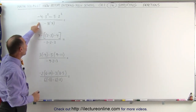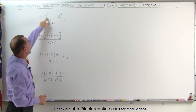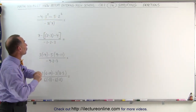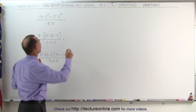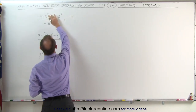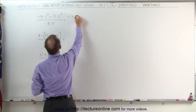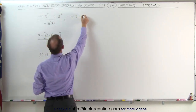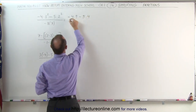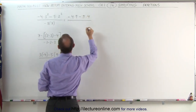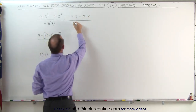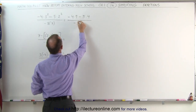In our first example, notice that in the numerator we have two exponents — we need to take care of those first. This becomes minus 4 times 3 squared, which is 9, minus 5 times 2 squared, which is 4. In the denominator, we have minus 8 times 7, which is minus 56.